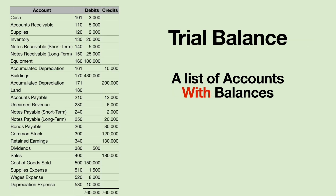Here is a trial balance. It looks almost just like a chart of accounts, but it includes their account balances. Notice how they are arranged in the debit and credit columns. Cash has the plus sign on the debit side — that's called the normal balance. The assets normally have balances on the debit side, with the exception of accumulated depreciation, which is an asset account with a credit balance. That's called a contra account or a contra asset account.